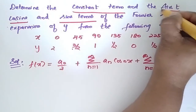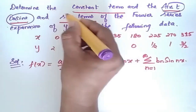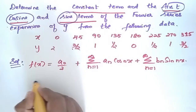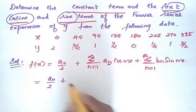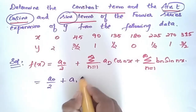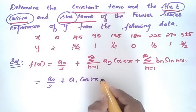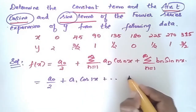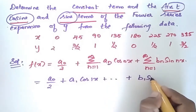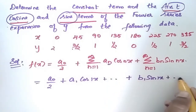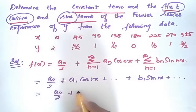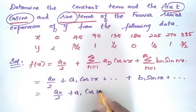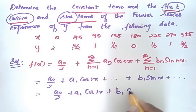We need to find the first cosine and sine terms. Substituting n=1, the expression becomes: a0/2 plus a1·cos(x) plus b1·sin(x).